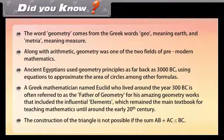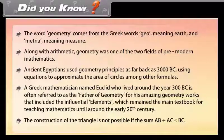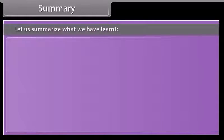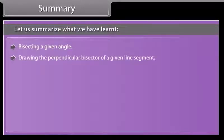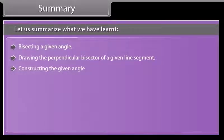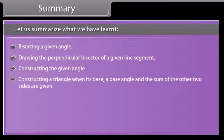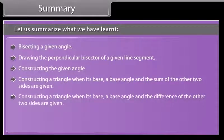Note: the construction of a triangle is not possible if the sum AB plus AC is less than or equal to BC. Summary: in this lesson we learned bisecting a given angle, drawing the perpendicular bisector of a given line segment, constructing a given angle, constructing a triangle when its base, a base angle and the sum of the other two sides are given, and constructing a triangle when its base, a base angle and the difference of the other two sides are given.